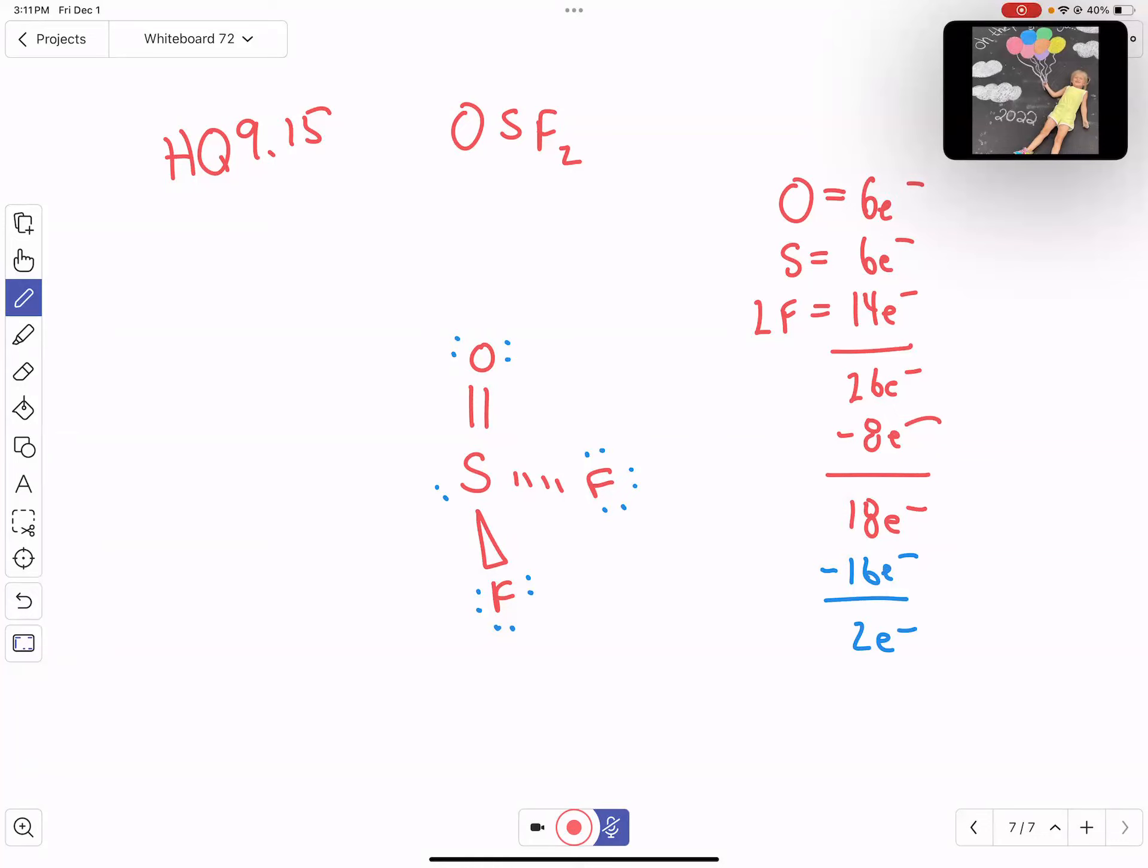It's a little bit hard to see drawing it this way. So I'll just draw it one more way that we can better see the geometry. So I'll just do sulfur here, and then oxygen, fluorine, fluorine, and then our lone pair of electrons up there.